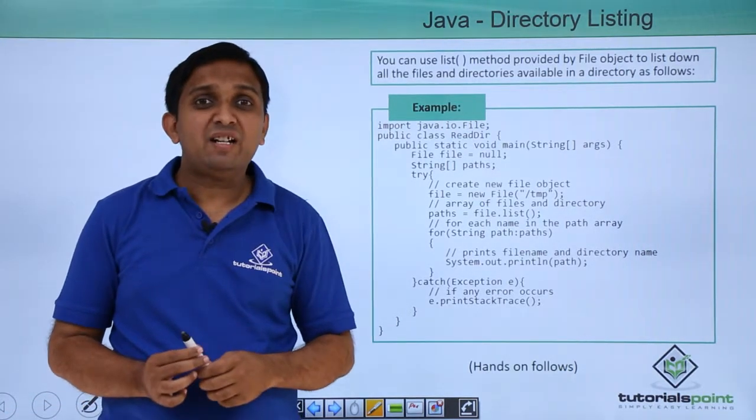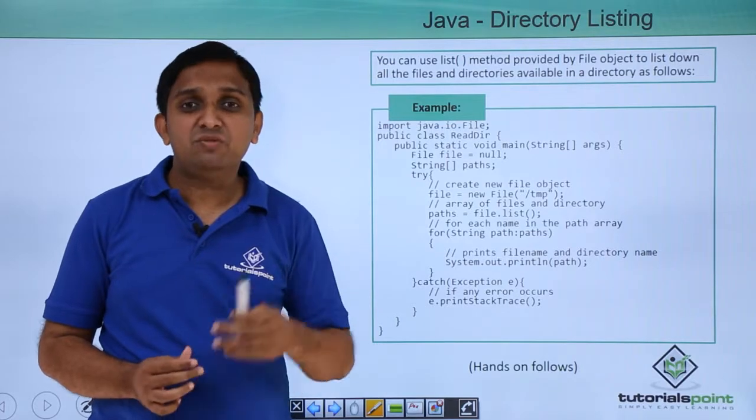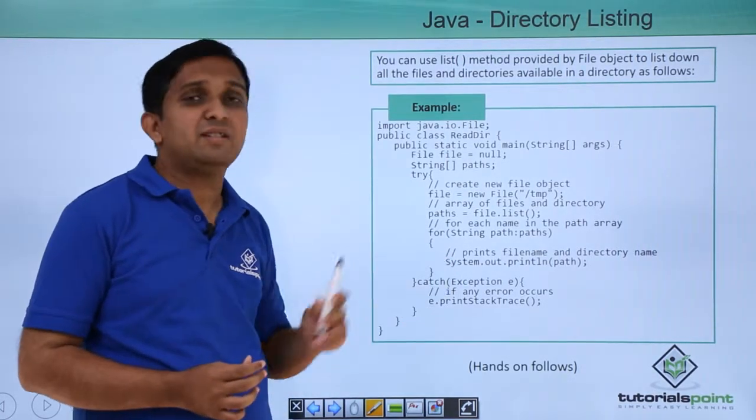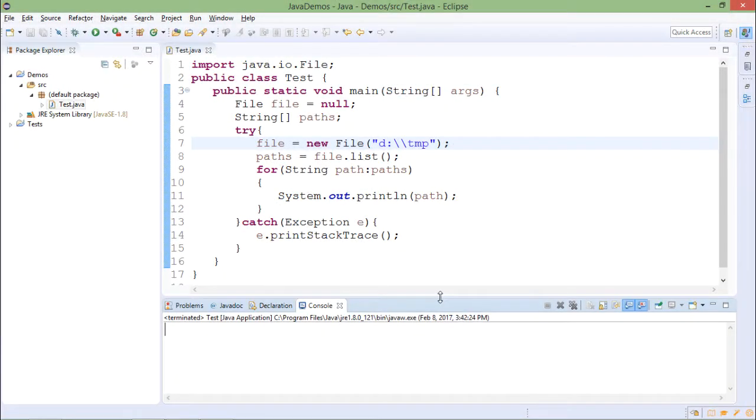So this will give you the output which is nothing but the list of all the files and subdirectories. We can implement this practically. This code is for directory listing through java program.